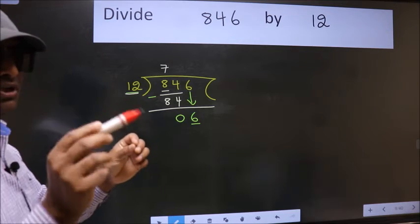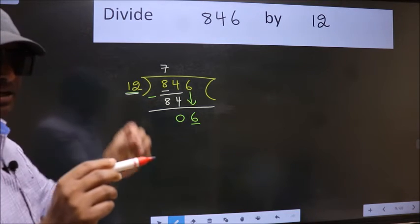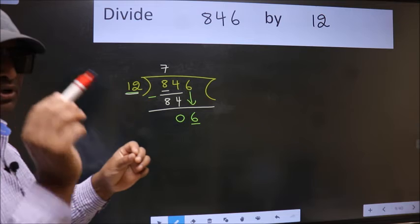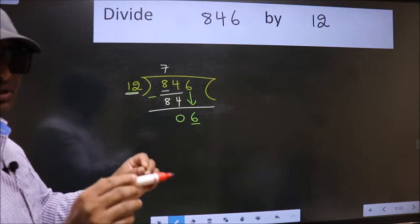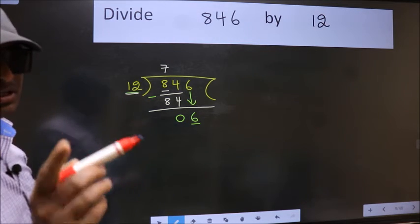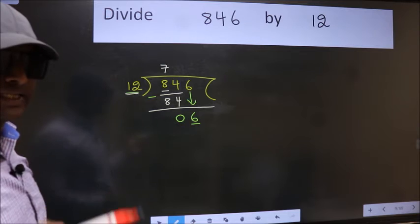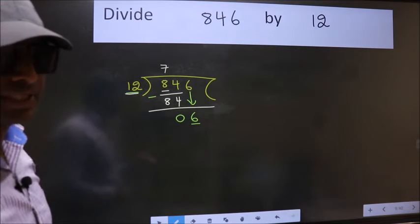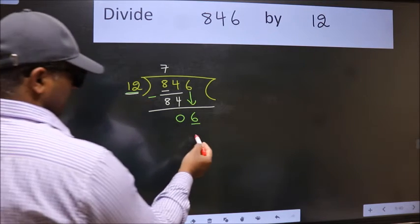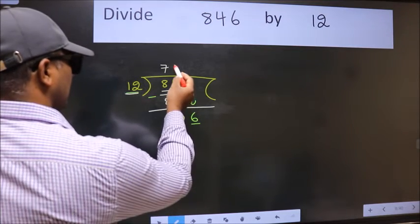Instead of that, what we should think of doing is which number should we take here? If I take 1, we will get 12, but 12 is larger than 6, so what we do is we take 0.